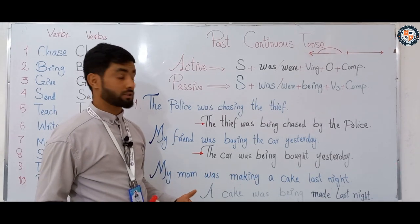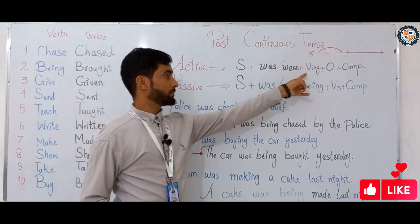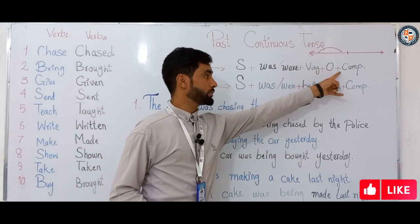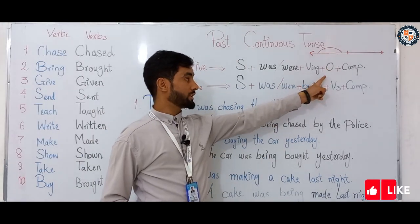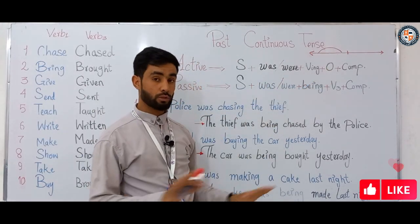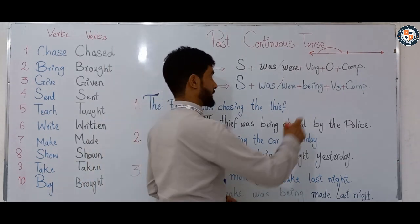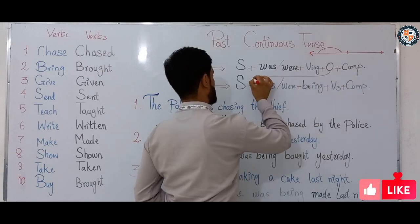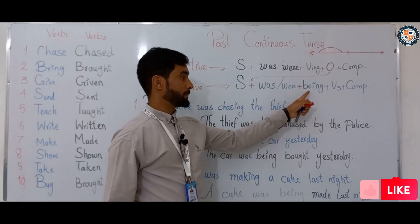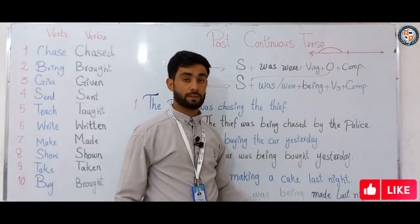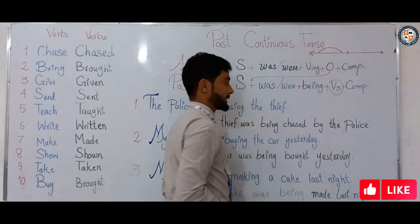The structure of past continuous in the active is: subject plus was/were plus verb-ing plus object plus complement. We need an object to change the sentence to passive voice — without an object, we cannot change it to passive. In the passive form, this object comes to the beginning and acts as a subject, then was/were plus being plus verb three plus complement. We always use verb three in the passive voice.